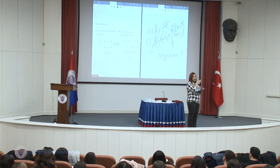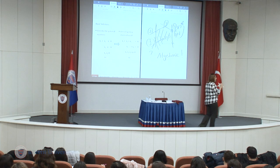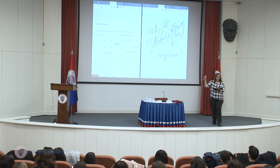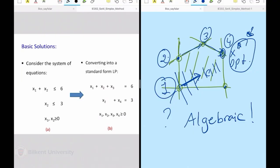Everything I have been saying from the beginning of today's lecture is because I need an algebraic way of characterizing these corner points. I can visualize them, but if I have three variables, four variables, a million variables, how do I characterize them? Because of all this, we came to the standard form requirements.